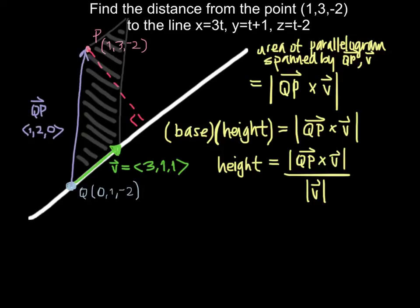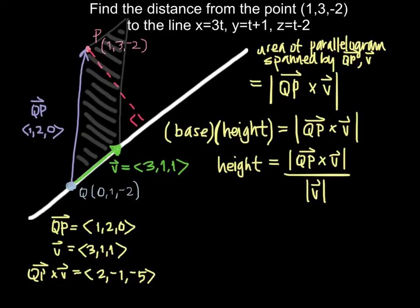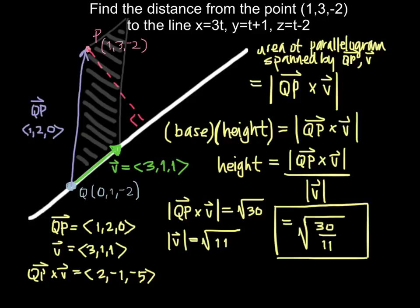Let's calculate the cross product first. Of course, what we really want is the magnitude of that cross product. So we have the square root of 30 is the square root of the sum of the squares for QP cross v. And the magnitude of v is the square root of the sum of the squares of the components of v, so we will get the square root of 11. So if we're really trying to compute the height here, we take the magnitude of the cross product divided by the magnitude of v, which is our base, we end up with the square root of 30 over 11. And that is our final answer.